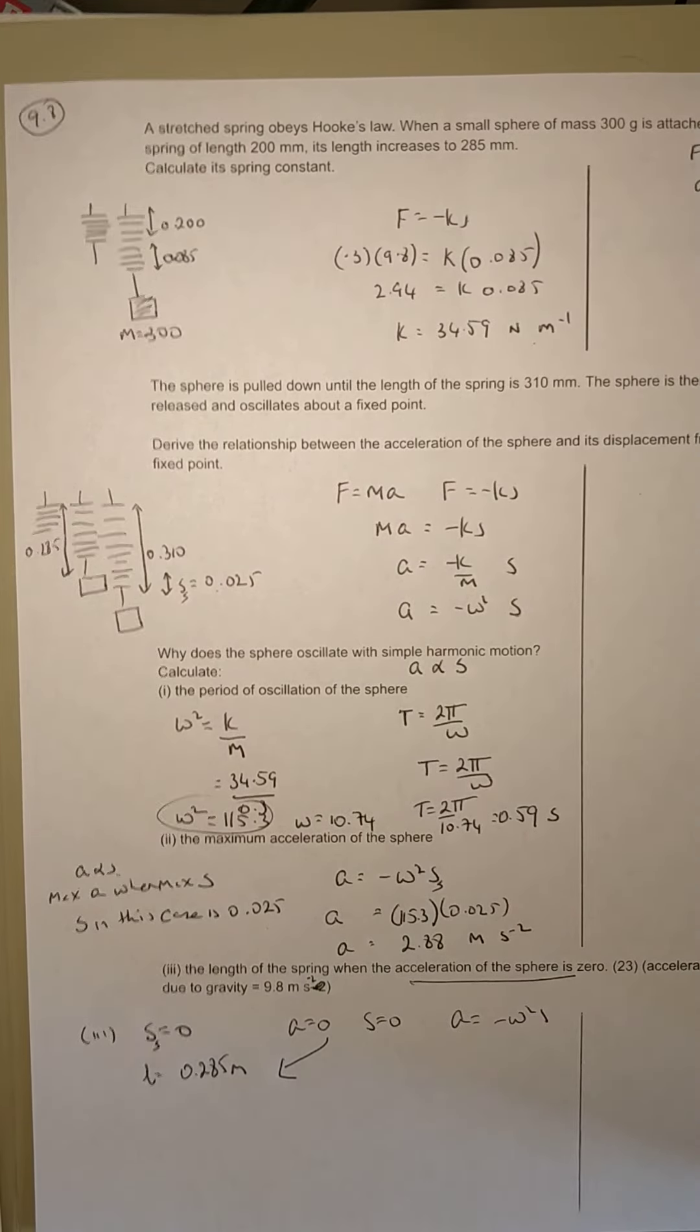get our answer: 2.88 meters per second squared. Finally, the length of the spring when the acceleration is zero. The length of the spring when acceleration is zero - acceleration is proportional to displacement, so acceleration is zero when